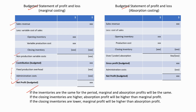If the inventories are the same for the period, marginal and absorption profits will be the same. We discussed about this under marginal and absorption costing. If the closing inventory is higher, absorption profit will be higher than marginal profit.